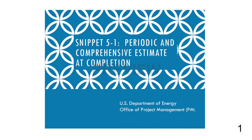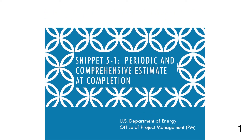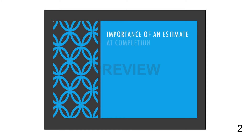The purpose is to provide a common understanding within DOE and among DOE contractors, and to provide consistency in understanding the differences and similarities in conducting a periodic or monthly EAC versus a comprehensive or bottom-up EAC. The Estimate at Completion, or EAC, is a crucial part of the Project Management Plan.